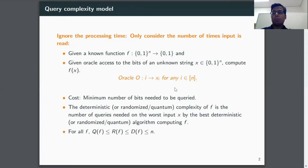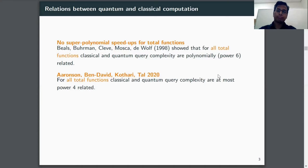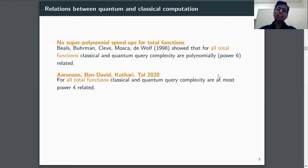Similarly, we can define randomized and quantum query complexity as well. We denote the randomized by R(f) and the quantum query complexity by Q(f). We are interested in knowing the relationship between classical and quantum query complexity. There is a result from 1998 by Beals et al. that for all total functions, classical and quantum query complexity are polynomially related — specifically power six. This year, Aaronson and others improved it to power four. This means that for all total functions we cannot have super-polynomial quantum speedup. But we saw earlier that there could be functions for which quantum computers give exponential speedup.